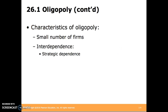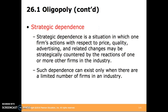Characteristics of an oligopoly include a small number of firms and interdependence — that is, strategic dependence between the firms. Strategic dependence is a situation in which one firm's actions with respect to price, quality, advertising, and related changes may be strategically countered by the reactions of one or more other firms in the industry. Such dependence can exist only when there are a limited number of firms in an industry.